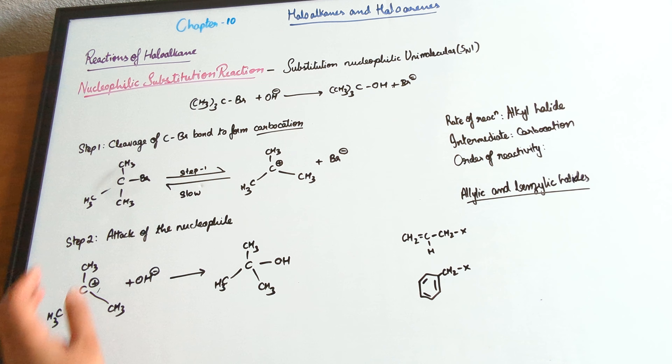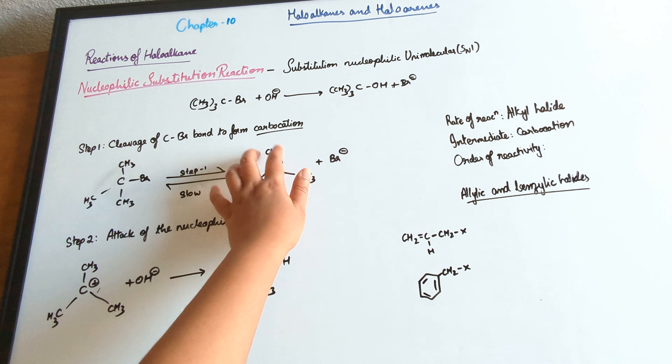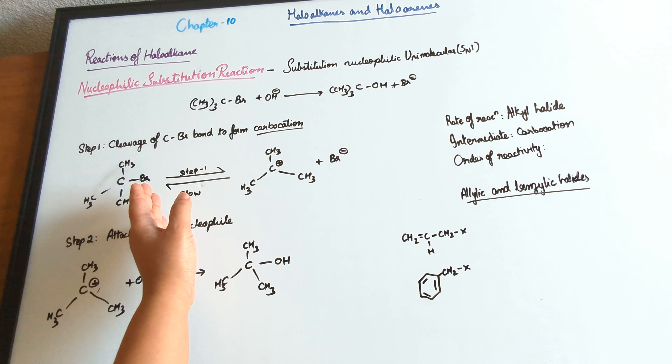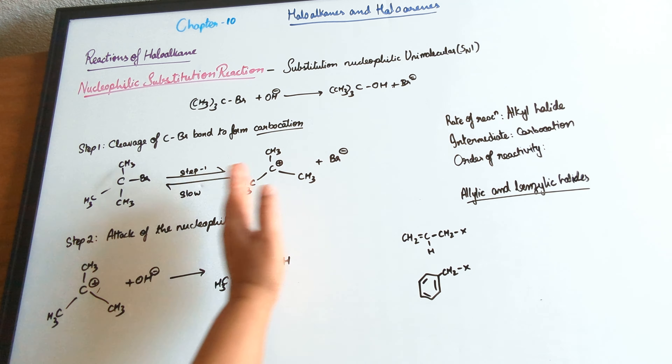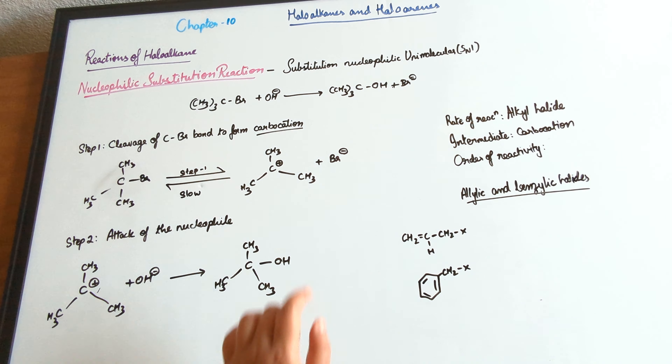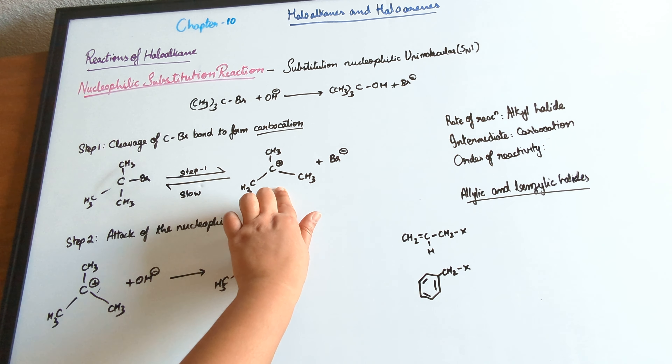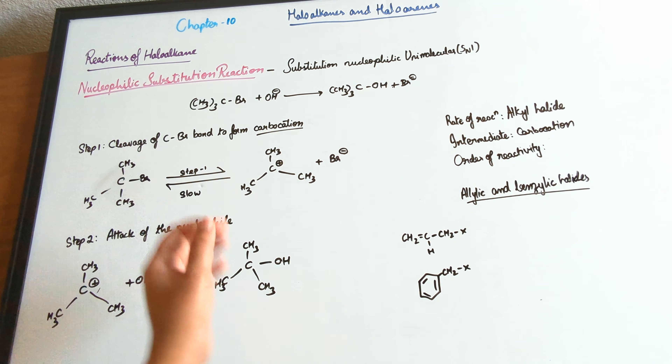Basically, you have two steps happening. The first step is the formation of a carbocation, where the bromine atom is kicked out as a bromide ion, leaving a positive charge on the carbon — this is the slow step and the rate-determining step. Next, the OH⁻ attacks the carbon, leading to the formation of the alcohol — this is the fast step.